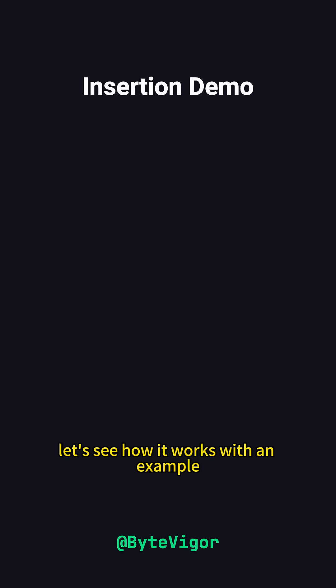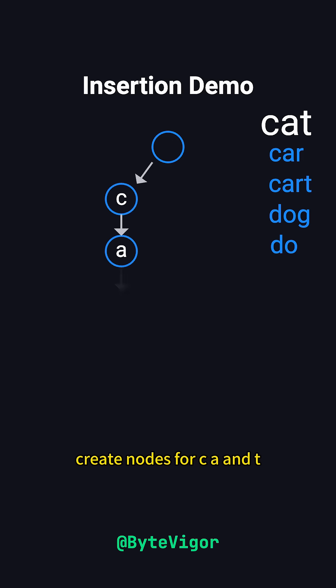Let's see how it works with an example. Suppose we insert the words cat, car, cart, dog, and do. For cat, we start at the root, create nodes for c, a, and t, and mark the node for t as the end of the word.